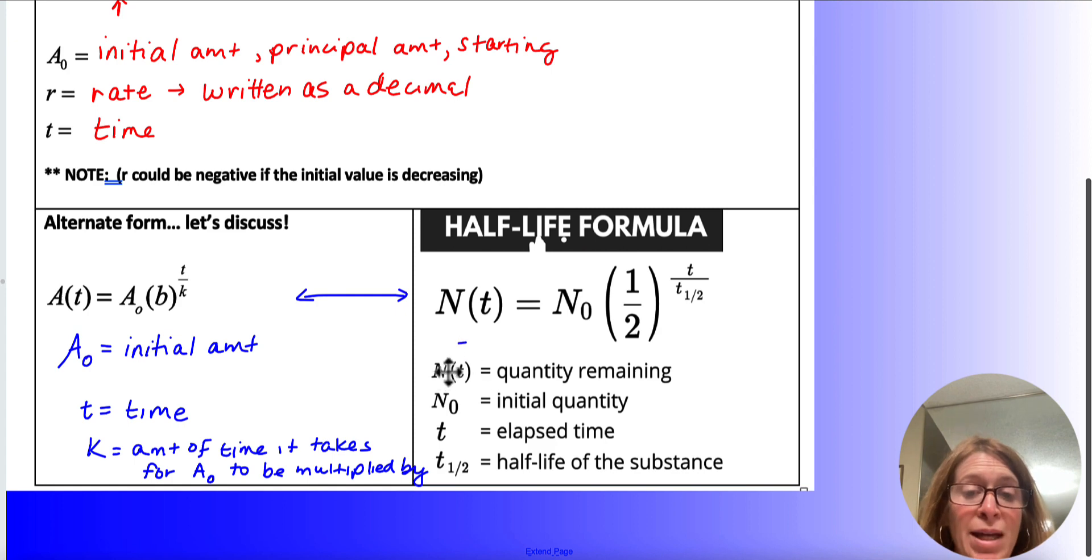So half-life would be N of t with the quantity remaining, N sub 0 is the initial quantity, t is the elapsed time, oh I didn't put that here, right? Oh I did, yeah. And t, t sub one-half is just the half-life of the substance. So if the half-life's five years, then t one-half would be five.